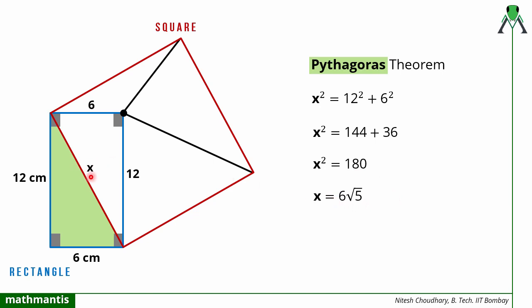So in this way we can find the diagonal of the rectangle that is nothing but the side of the square. So this is 6 root 5. So the sides of square we can mark by 6 root 5.